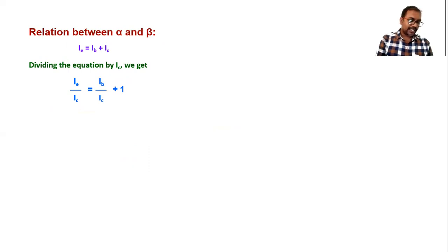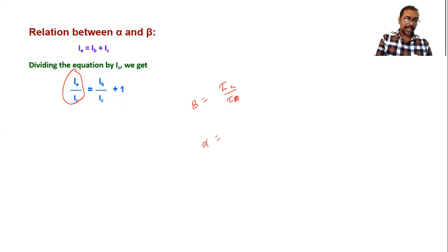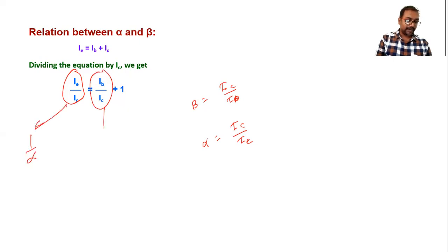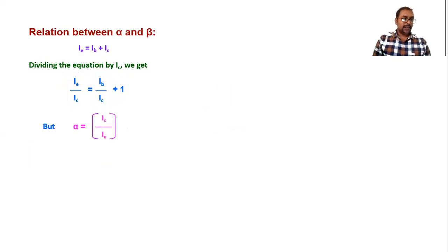Now, since beta = Ic/Ib, we have Ib/Ic = 1/β. And since alpha = Ic/Ie, we have Ie/Ic = 1/α. Substituting these into our equation, we get 1/α = 1/β + 1.